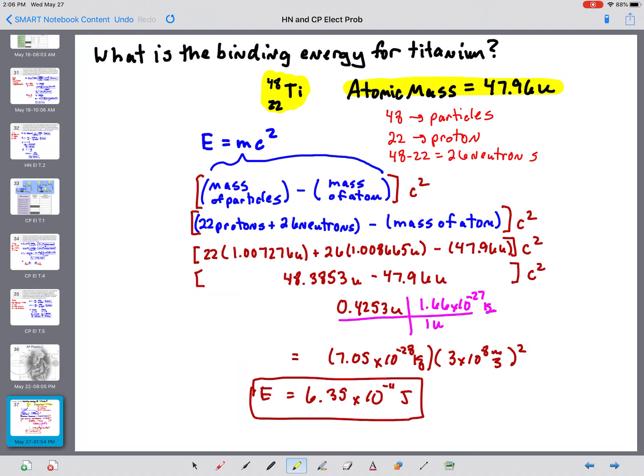So when we want to calculate binding energy, we're going to use E equals mc squared. That mass is the mass defect, which is the difference between when the particles are separate and when they are combined in the nucleus. So to get the particles separate,